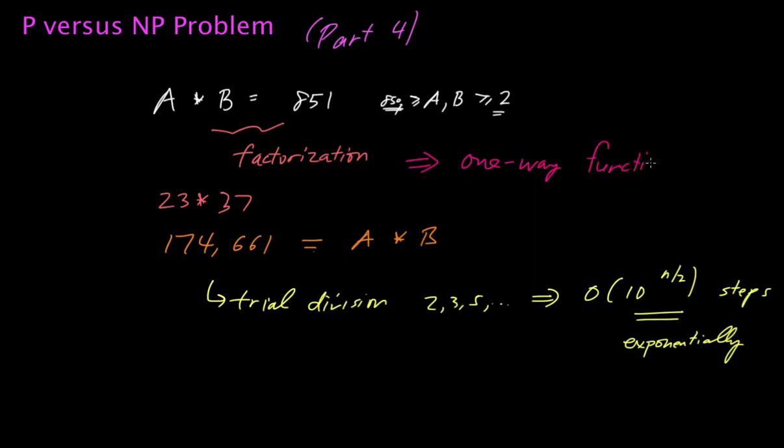Basically, we're saying easy to go in one direction but hard to go in the other. Multiplication appears to have this one-wayness property, where it's easy to multiply numbers, but given the product of two numbers, it does not always seem to be easy to go backwards, to find the constituent factors.